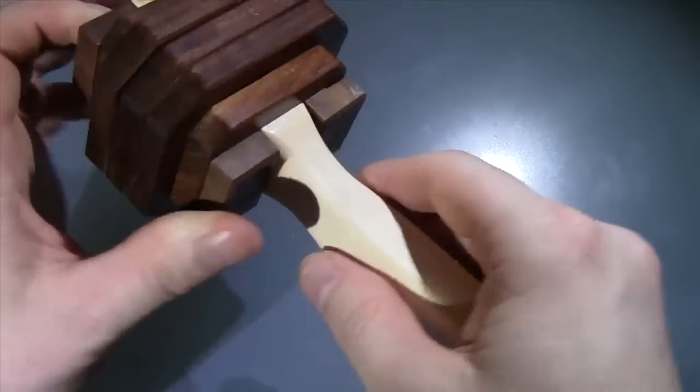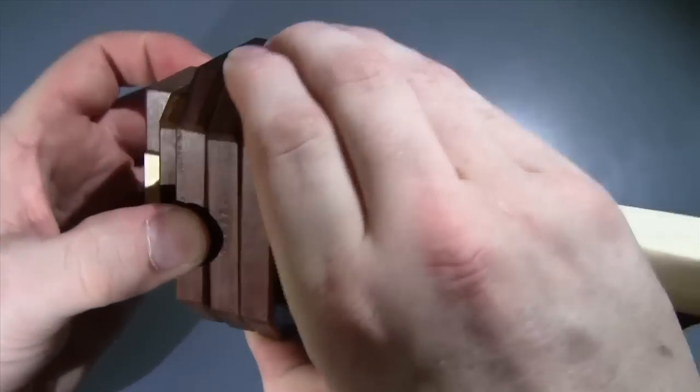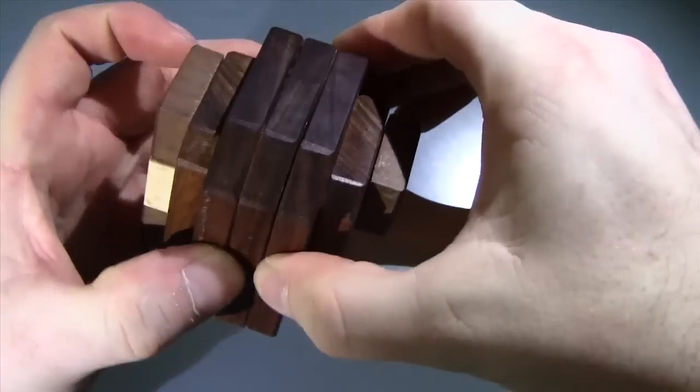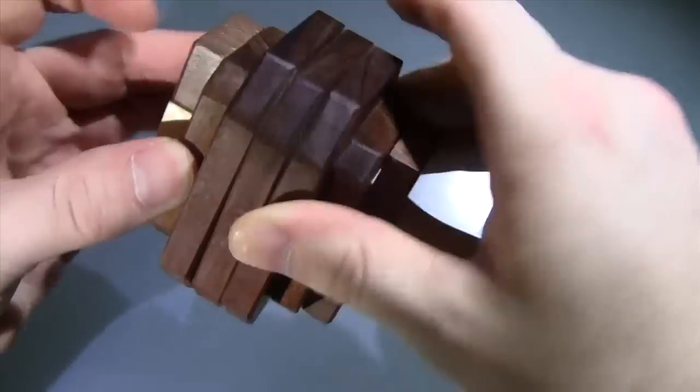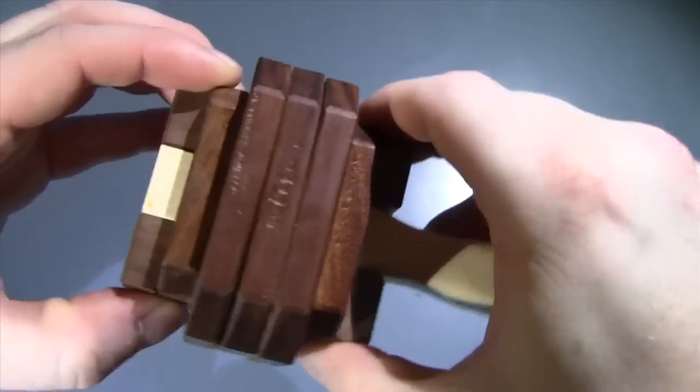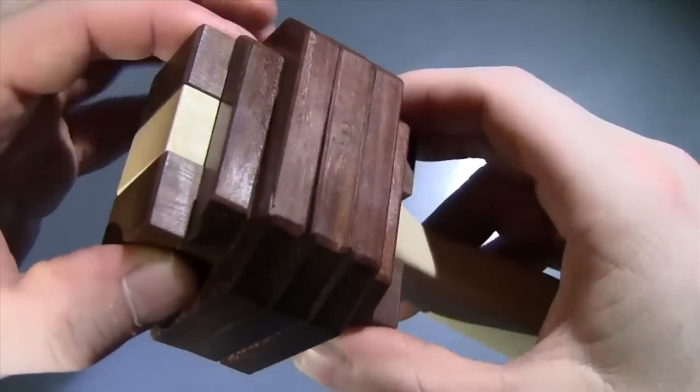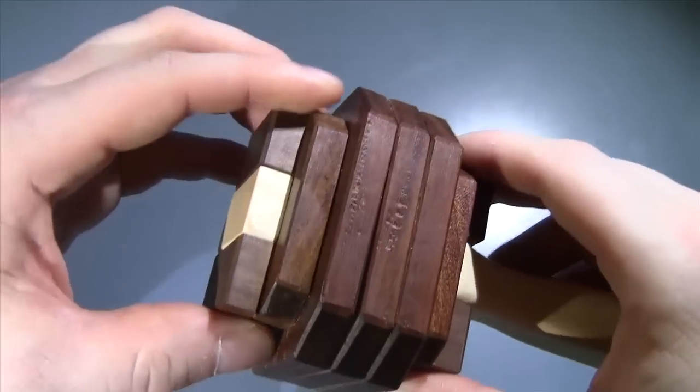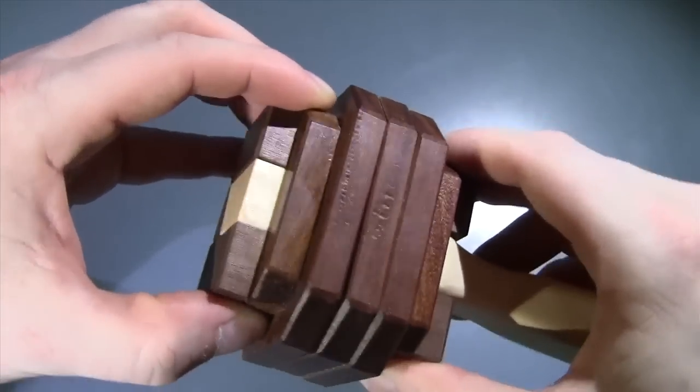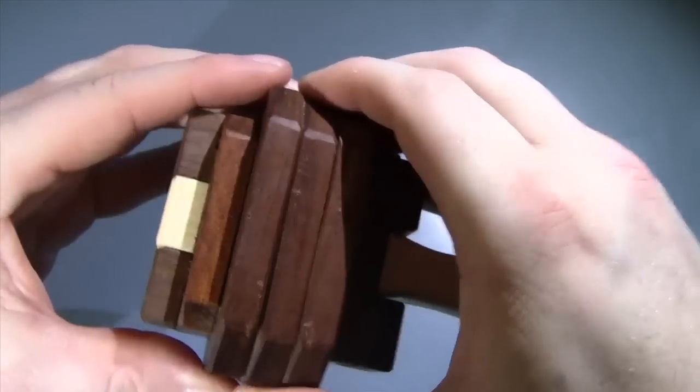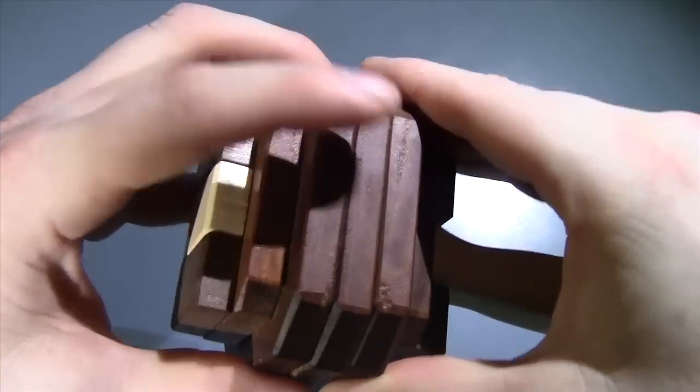It also has discs that probably move around, which are these ones here. I'm just searching for my first move now. This is made out of the woods called Ipe, walnut, and maple.